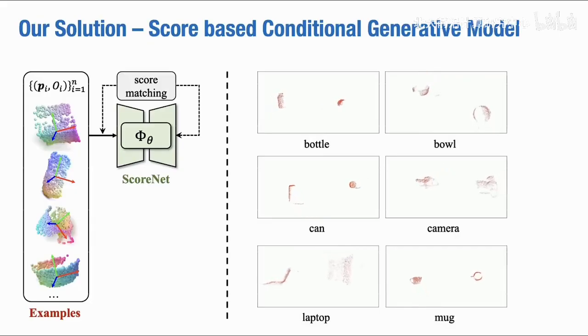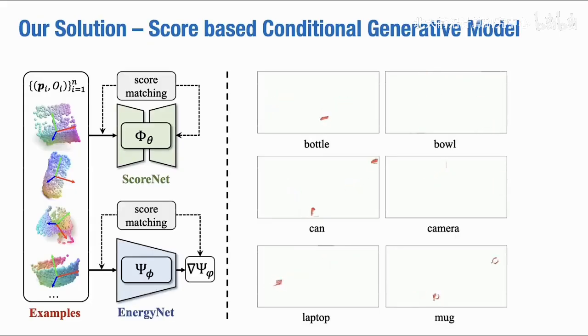However, the generated pose might be an outlier. Hence, we further train an energy network for filtering out the outliers according to the output energies.